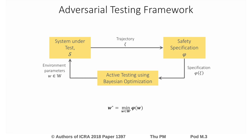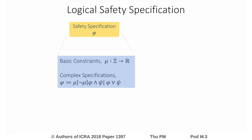Instead, we utilize the structure of phi to improve the modeling. In our framework, phi can be expressed as a logical function of individual constraints or predicates which are assumed to be smooth and continuous functions of the trajectories. However, phi itself can be non-smooth.